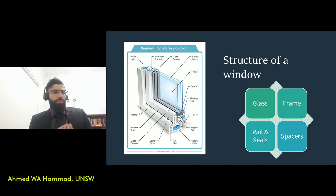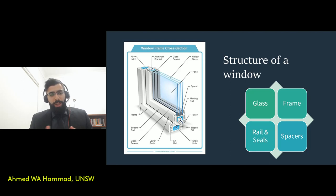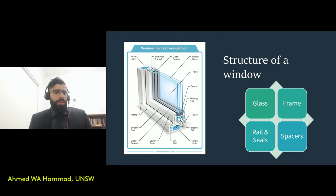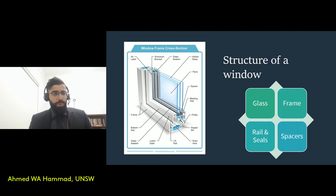Moving on to the structure of a window — what is a typical window composed of? You can think of four main components. Number one, you have your glass panes. If you've got double glazing, you will have several glass panes; if you have a single glazing window, it's just one single pane. The other components are the frame, the rails and seals, and the spaces — in cases where you have double glazing. The frame comes in different materials: vinyl, wood, fiberglass, and aluminium.